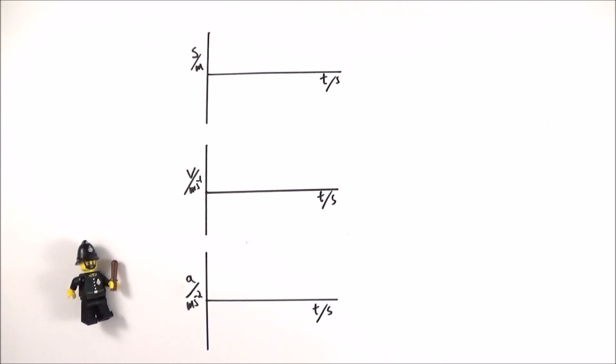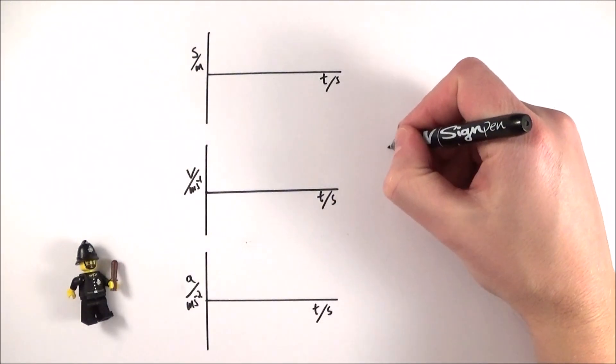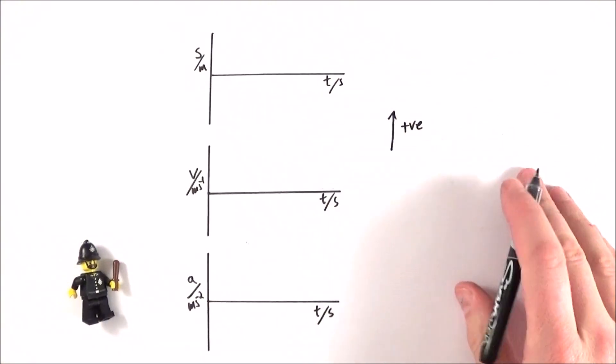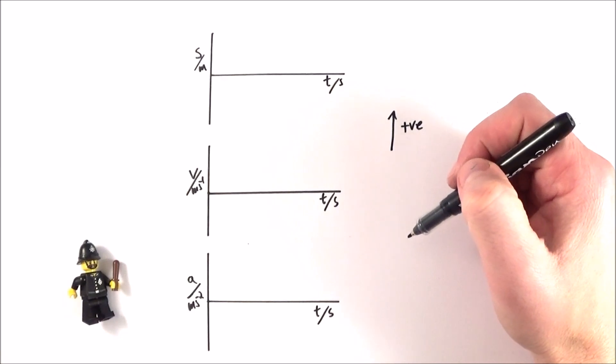Now what I'm going to do is I'm going to start by saying that the upwards direction is positive. So plus v e for positive. And that means anything upwards is positive, anything downwards is negative.